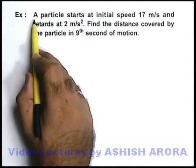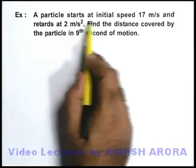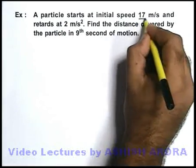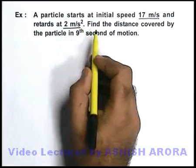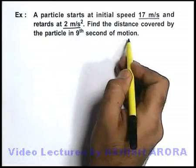In this example, we are given that a particle starts at initial speed of 17 meters per second and it retards at 2 meters per second squared. We are required to find the distance covered by the particle in the ninth second of motion.